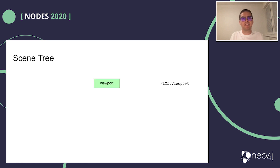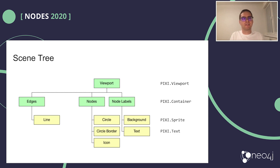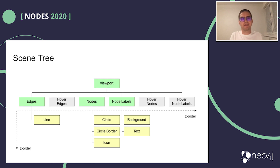For rendering with Pixi, it's important to lay out your scene tree. At the highest level, I have the viewport object. Viewport contains layers for nodes, node labels, and edges. The node layer contains circles, borders, and icons. The node labels layer contains label background and text. The edges layer contains lines. The reason for ordering the layers is that they are drawn in the same order — so edges are drawn first, then nodes, and so on. I also added separate empty layers for raising up objects so they appear on top when hovered.